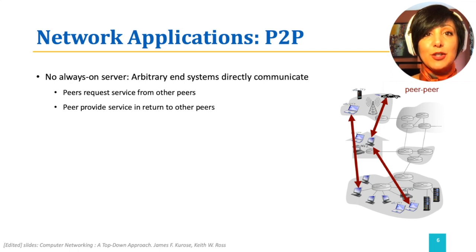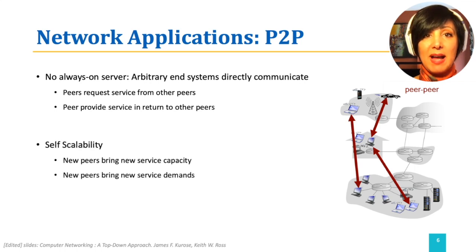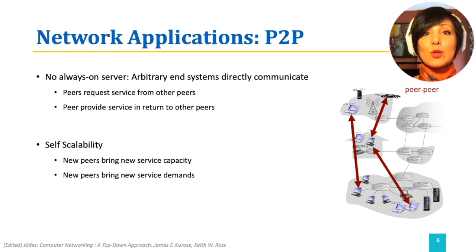In peer-to-peer architecture, there is no always-on server. Peers request service from each other and provide service to each other in return. As new peers are added in the system, they come in with their service demands as well as their resources and service capacity. Therefore, this helps the peer-to-peer system to scale and keep the service running with the addition of new peers into the system.